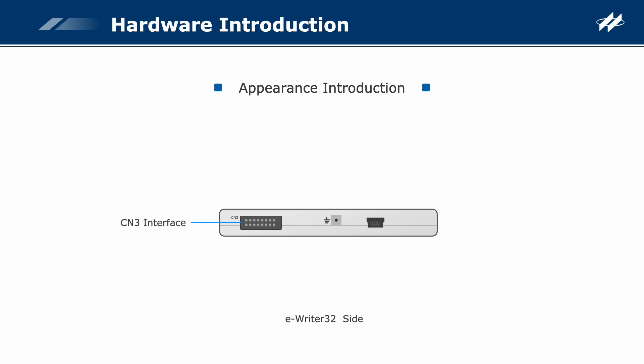CN3 interface: the interface connected to the handler implements the function of external signal controlled eWriter32 programming. USB interface: the eWriter32 is equipped with a USB-A to mini USB connector cable for connecting to a PC USB port (online mode) or a 5-volt power adapter (offline mode). This USB conforms to the USB 2.0 full speed, 12 megabits per second, specification.